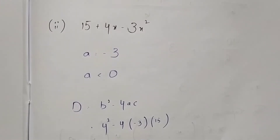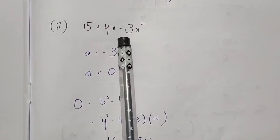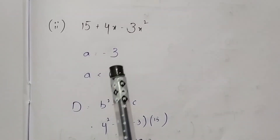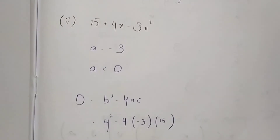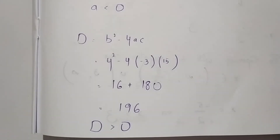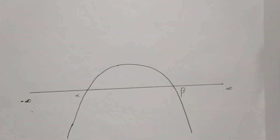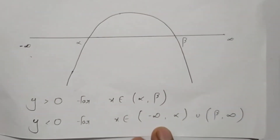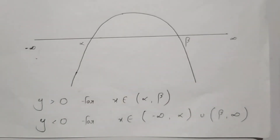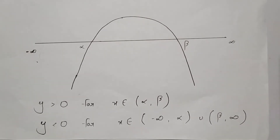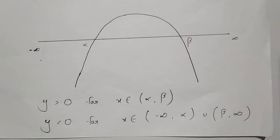Now let us solve the second equation: 15 + 4x - 3x². Here the value of a is -3, which is less than 0, and the discriminant value is 196, which is positive. When a is negative and the discriminant is positive, the graph of that expression is an inverted parabola. Alpha and beta are the roots, and the expression is positive if x lies between them.